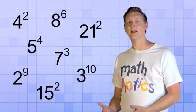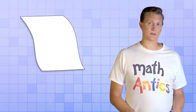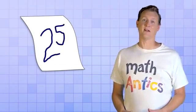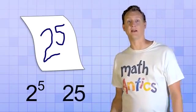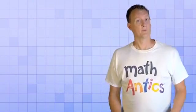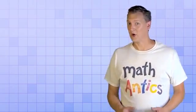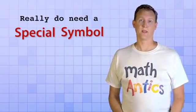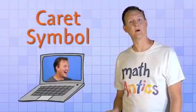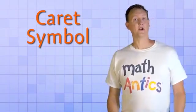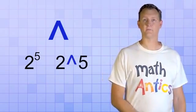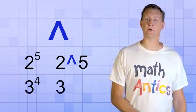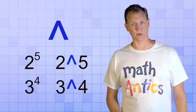The only real concern is when writing exponents down on paper when you're trying to solve problems. If you're not careful, or have really messy handwriting, you might accidentally confuse an exponent like 2 to the 5th with a two-digit number like 25. And obviously that would be a problem. But even if you're careful when writing exponents, there are some times when you really do need a special symbol, like when you type an exponent into a computer. In that case, it's very common to use the carat symbol as the exponent operator. So 2 to the 5th power would be written as 2 carat 5, and 3 to the 4th power would be written as 3 carat 4. And that notation is used all the time in computer programming.